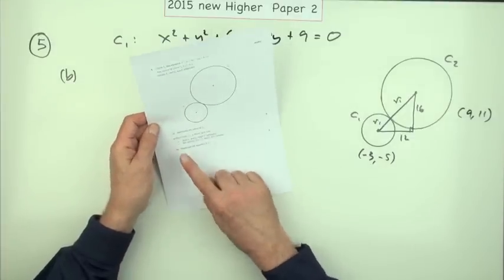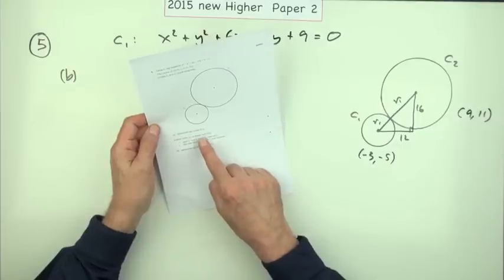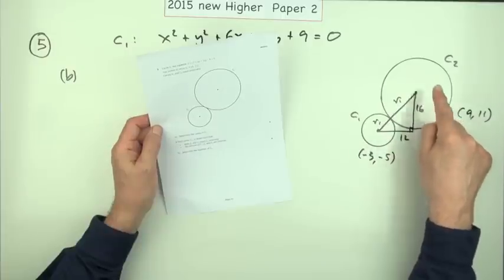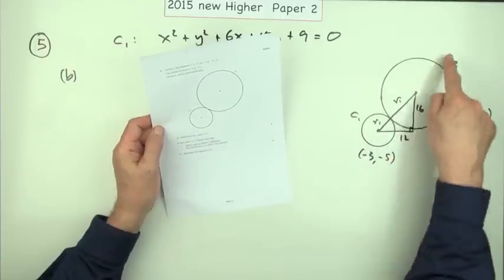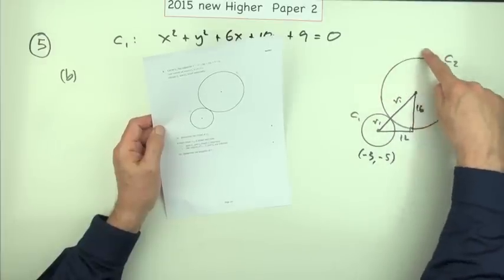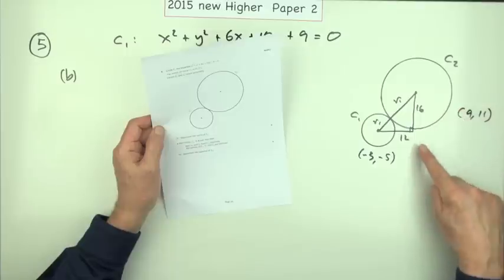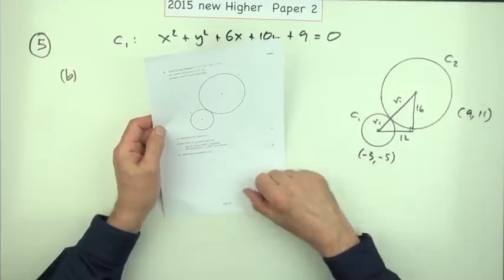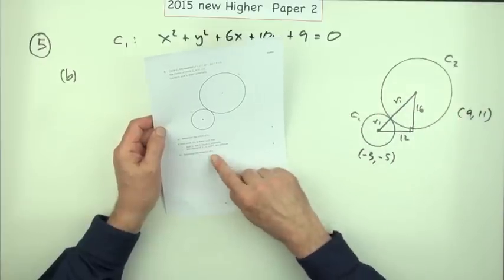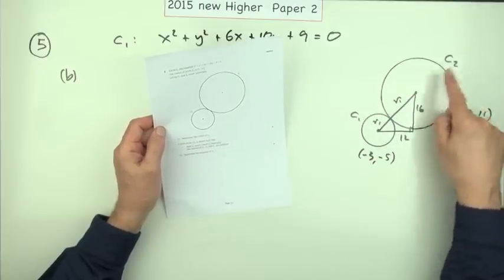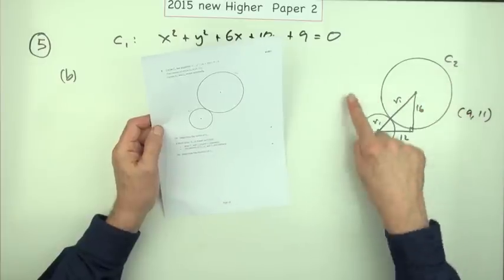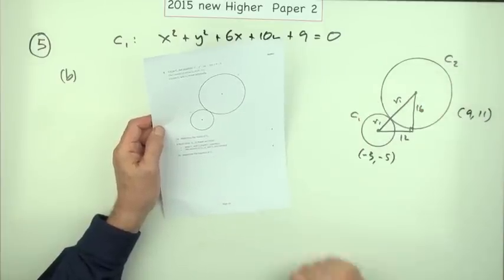Now part b: a third circle c3 is drawn such that both c1 and c2 touch this circle c3 on the inside internally. So if that touches the inside and this touches inside, it must be a circle that goes around the two of them like this. And it says such that the three centers will be collinear, and they would have to be because it must make a symmetrical system. Determine the equation of this encompassing circle for four marks.